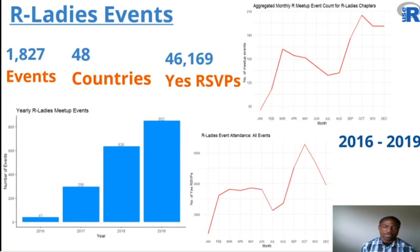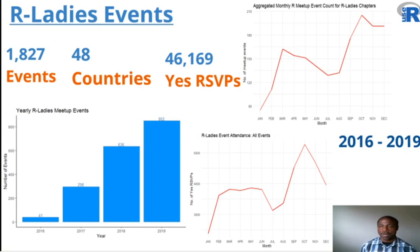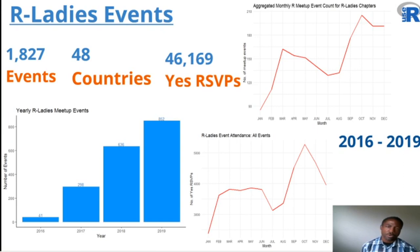R Ladies events also show growth — over 1,800 events — but most importantly, growth across time year over year, especially since 2016 when there were only 40 R Ladies events. In 2019, there were more than 850 as shown in the bar chart at the bottom left. The top right bar chart shows Meetup event counts with a similar pattern — a drop in the winter months. We also see across all events the monthly counts, showing a similar pattern between R Ladies events and all R events.